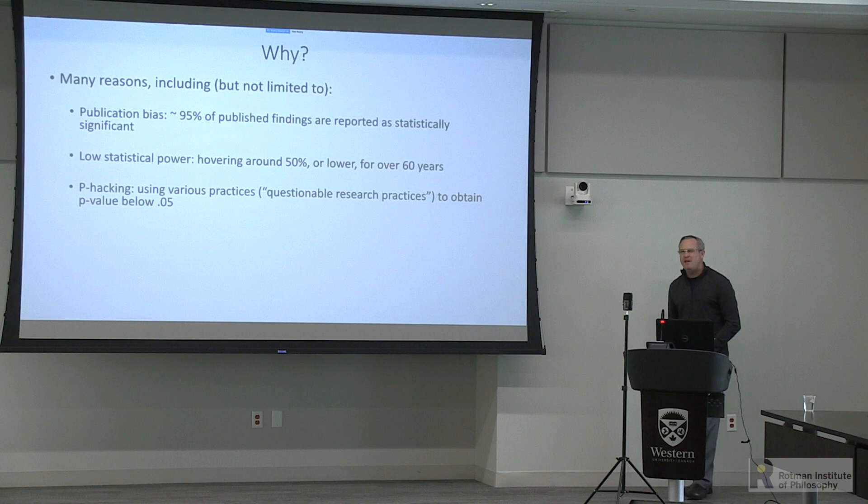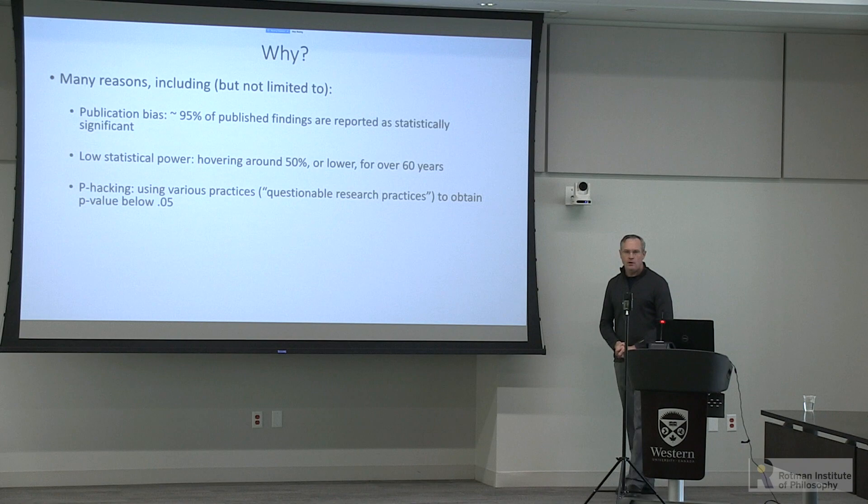P-hacking — using various questionable research practices to obtain a p-value below .05 — can take many forms. In my field of relationship science, I remember as an undergrad testing a fairly specific hypothesis, but the study had questionnaires taking participants one hour to complete, with many dependent variables. The idea: if you have five dependent variables and don't know which one should work, you check them all, one of them works, and you take that one. That kind of practice increases your actual alpha level way above .05.